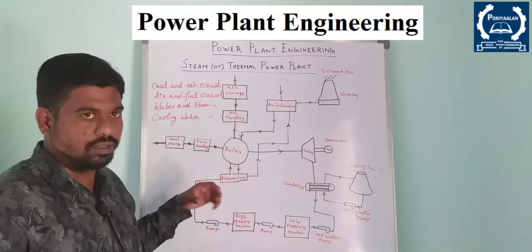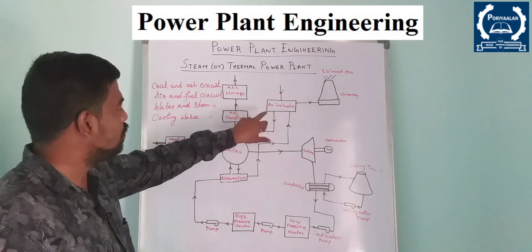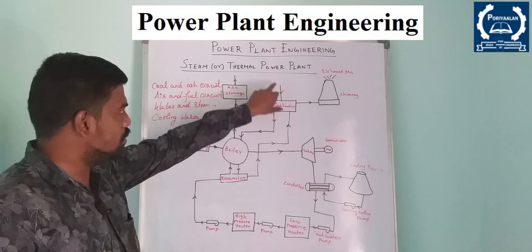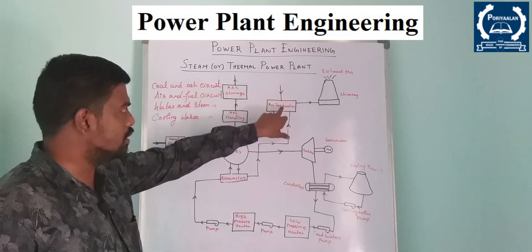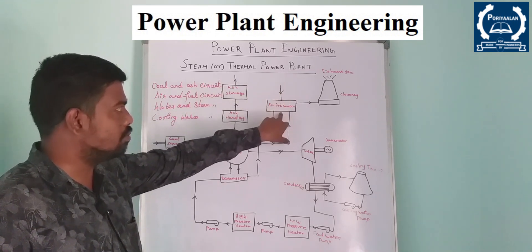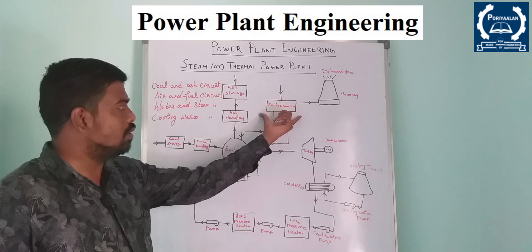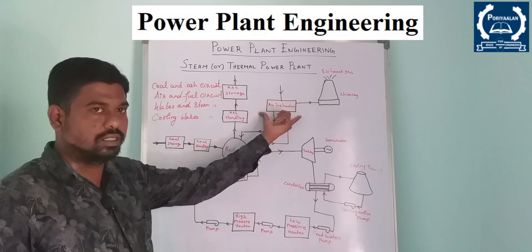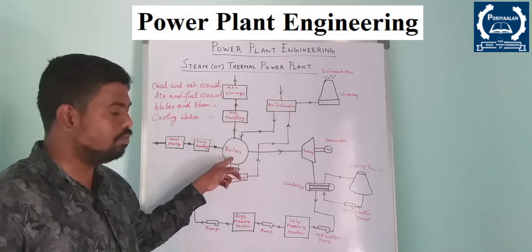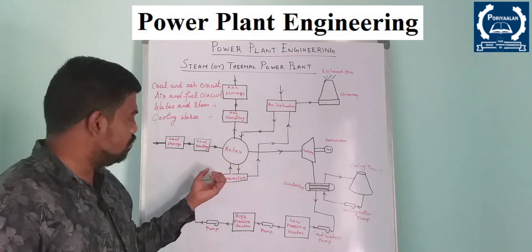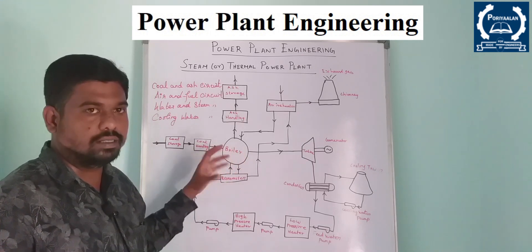Before the coal burns, we will get air. Therefore, the second circuit will be the air and fuel circuit. The air is taken from the atmosphere. The burning process takes place in the combustion chamber.